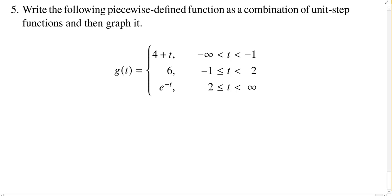Let's give it a try. The first thing I see is that g starts at 4 plus t right from the beginning. Then when does something happen? The special points are going to be at negative 1 and at 2.